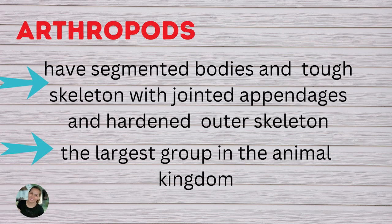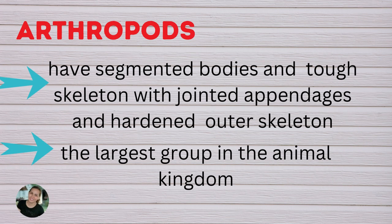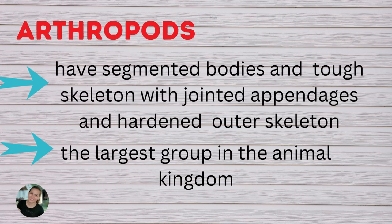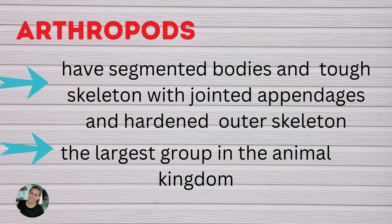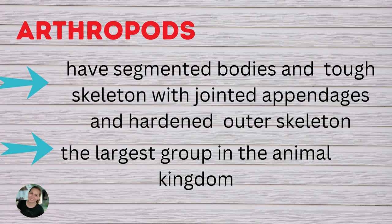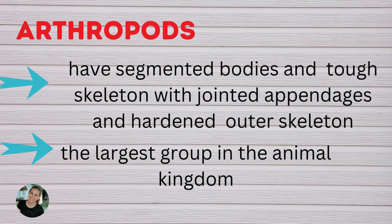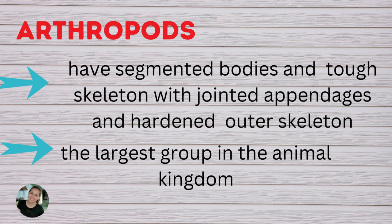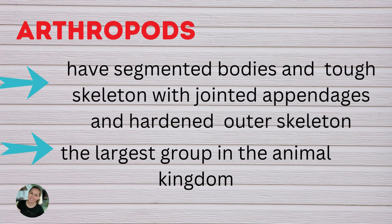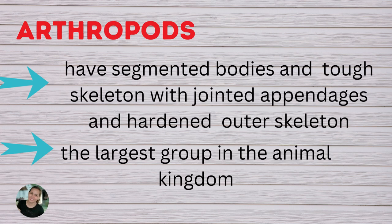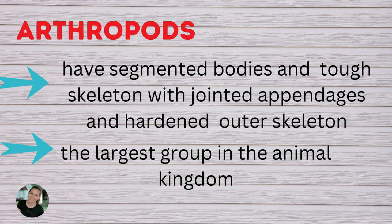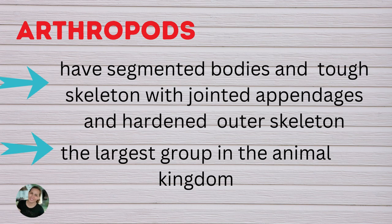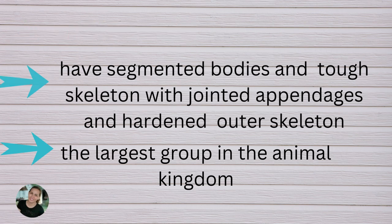The first group are the arthropods. They have segmented bodies and a top skeleton with jointed appendages and a hardened outer skeleton. This is the largest group in the animal kingdom.